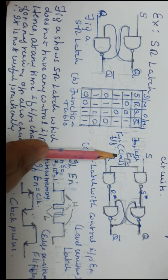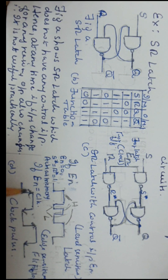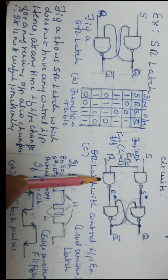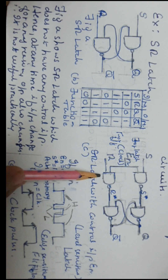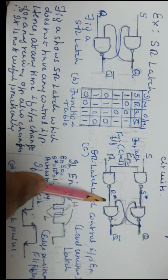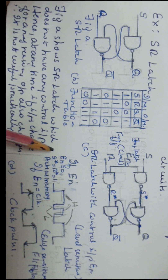Instead of the enable signal, if clock pulses are given: from one edge to the next is one time period; for half the cycle it is logic 1, for the other half it is logic 0 — that is a 50% duty cycle, which is a clock pulse. If such a clock pulse is given, the circuit becomes sensitive to the edges of the clock — either the 0-to-1 transition or the 1-to-0 transition, depending on whether it is a NAND-based or NOR-based circuit. A circuit that is sensitive to clock edges is called a flip-flop. So the basic storage element that is level sensitive is called a latch, and the basic storage element that is edge sensitive is called a flip-flop.